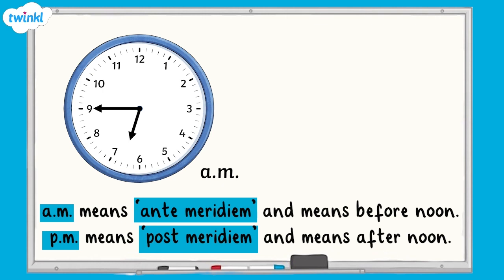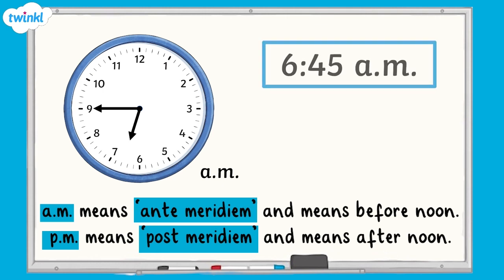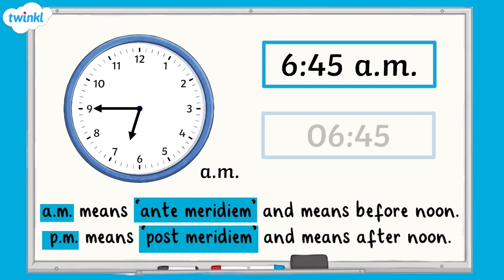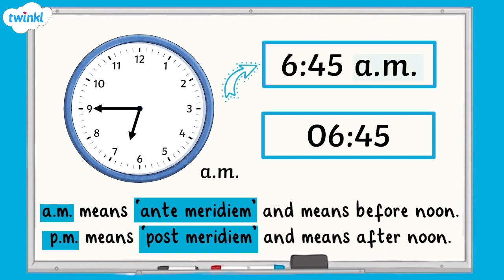On a digital 12 hour clock, it would look like this. On a 24 hour digital clock, it would look like this. The 12 hour digital clock shows whether the time is AM or PM, whereas on the 24 hour clock, it does not.